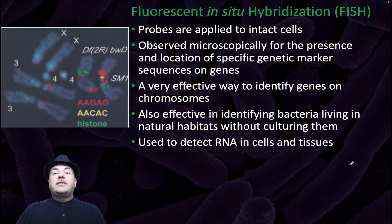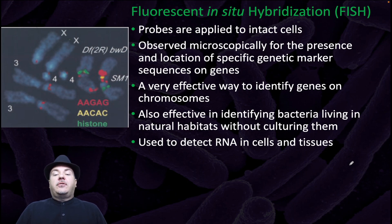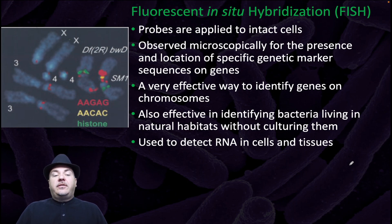Probes are also used for fluorescent in situ hybridization, or FISH. Probes are applied to intact cells and observed microscopically for the presence and location of specific genetic marker sequences on genes. This is a very effective way to identify genes on chromosomes, identify bacteria living in natural habitats without culturing them, and detect RNA in cells and tissues.